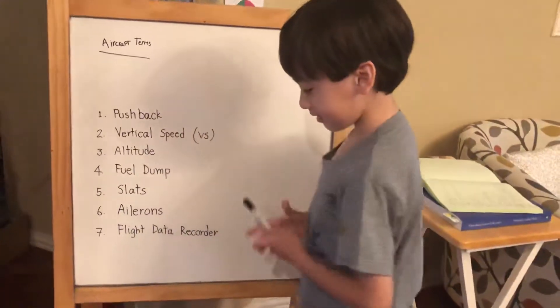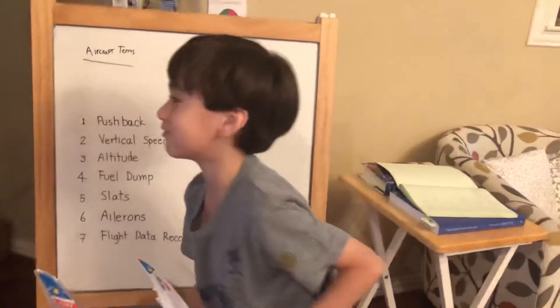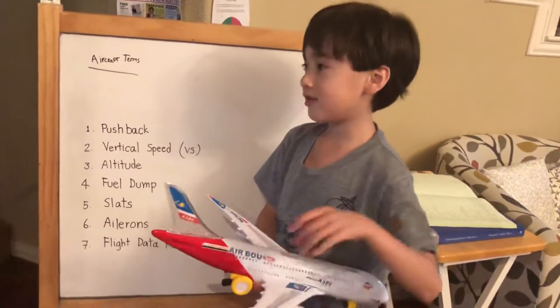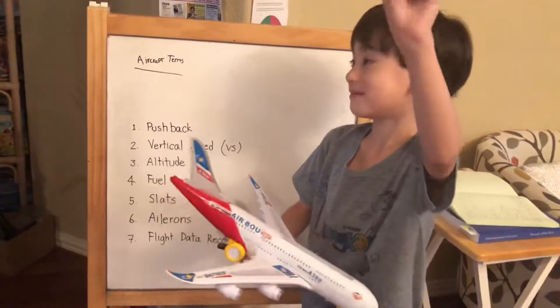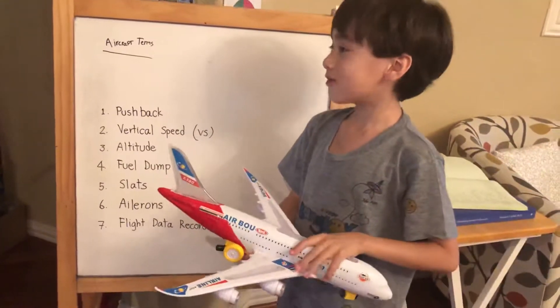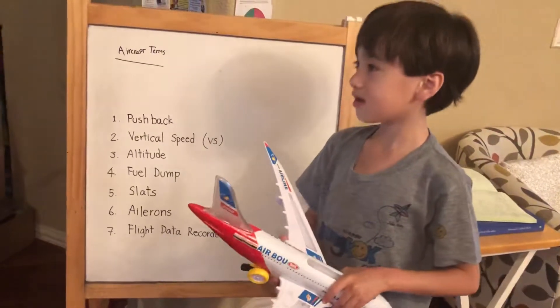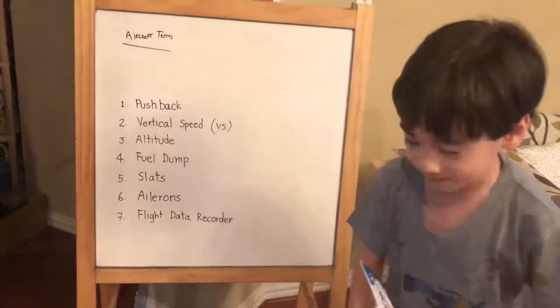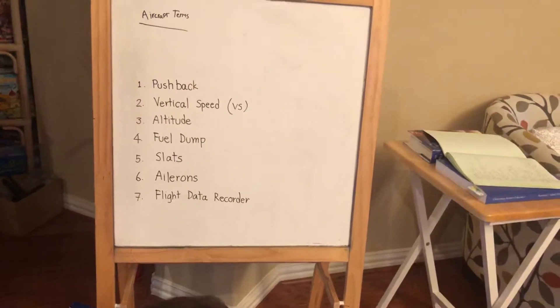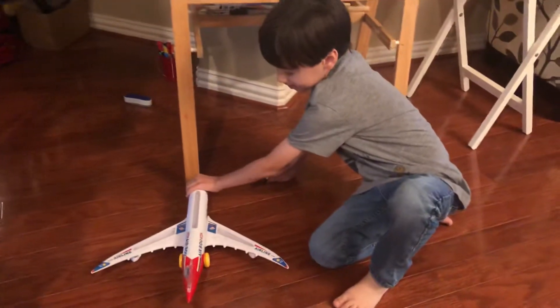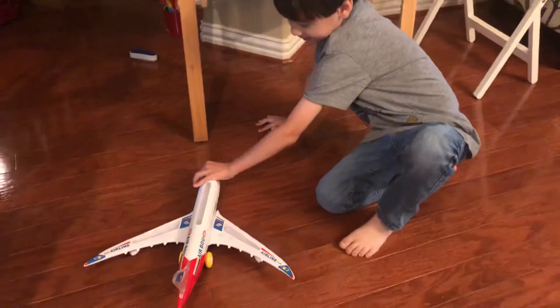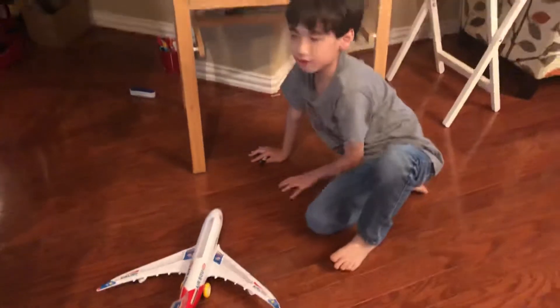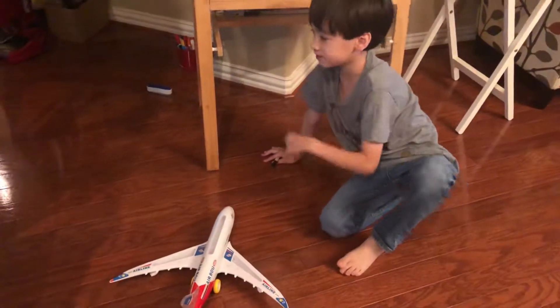Number one: pushback. Here's our demonstration aircraft. A pushback is when an aircraft is parked at its gate and wants to come out. The aircraft is towed, usually by a tow truck, and is confirmed by air traffic control. For example, the aircraft is parked right there, so it pushes back like this, coming out very slowly. It doesn't use its own power — it uses another vehicle towing it from the front. That's a pushback.